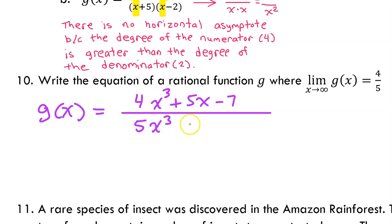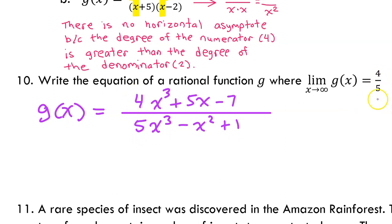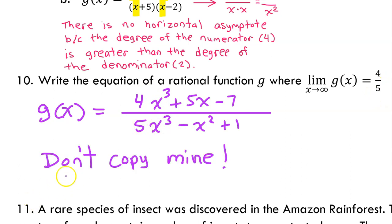Degrees equal — for example, I could write x to the third power plus 5x minus 7 in the numerator and 5x to the third minus x squared plus 1 in the denominator. What matters is the leading coefficients are four over five and the degrees are equal. Please make up your own — don't just copy mine.